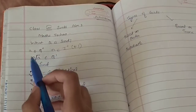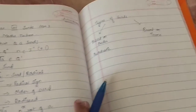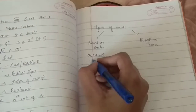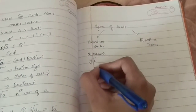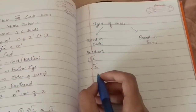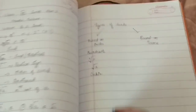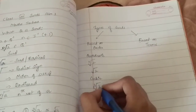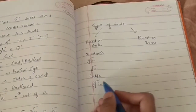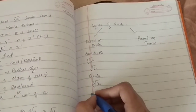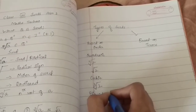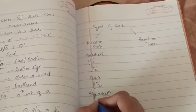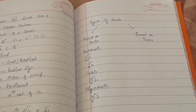The order n is the number in the root symbol. For a quadratic surd, the order is 2 — for example, root 2. For a cubic surd, the order must be 3 — for example, the cube root of 2. For a biquadratic surd, the order is 4 — for example, the 4th root of 3.